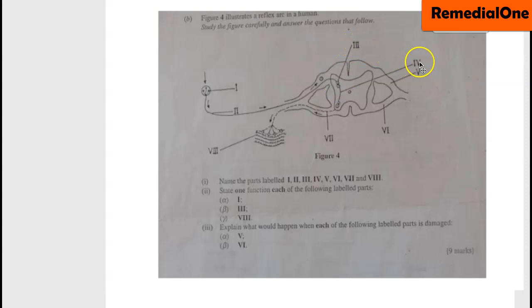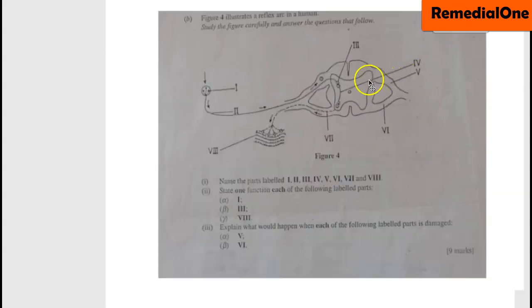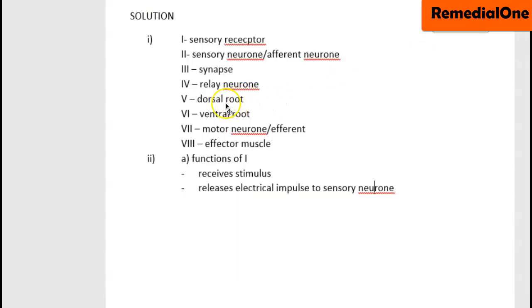The part labeled IV — let's look at the name. The part labeled V is called dorsal root. V is called dorsal root.